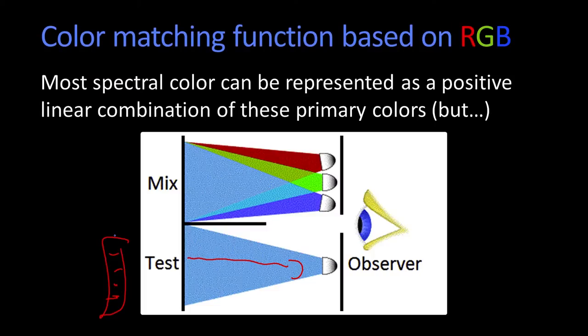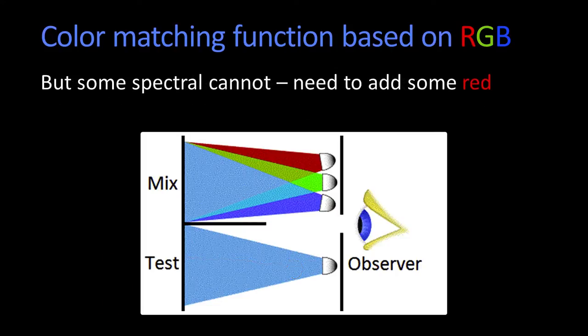And most of the spectral colors could be done this way. You could just add a certain amount of that light. But it turned out that some of the colors couldn't be matched unless you actually added a little bit of red to the original test light.